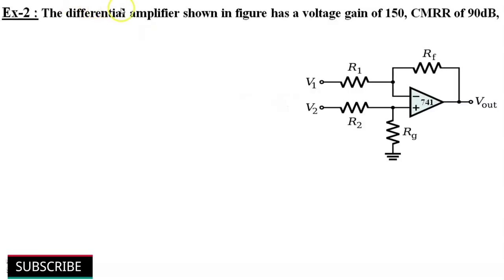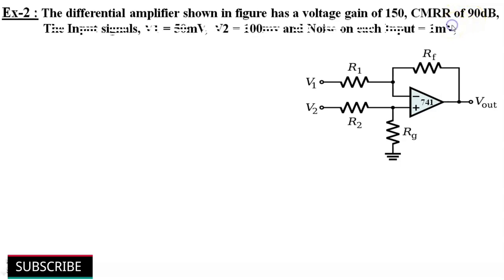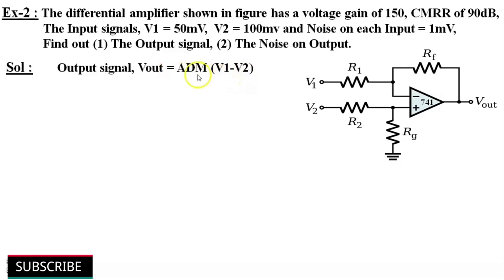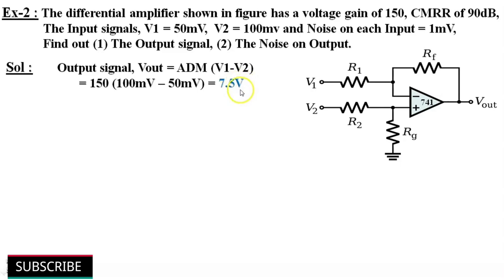Example 2: A differential amplifier has a voltage gain of 150 and a CMRR of 90 dB. Input signals are V1 = 50 mV and V2 = 100 mV, with a common mode noise on each input of 1 mV. Find the output signal and the noise on the output. Solution: V-out = ADM × (V1 − V2) = 150 × (100 mV − 50 mV) = 7.5 V.